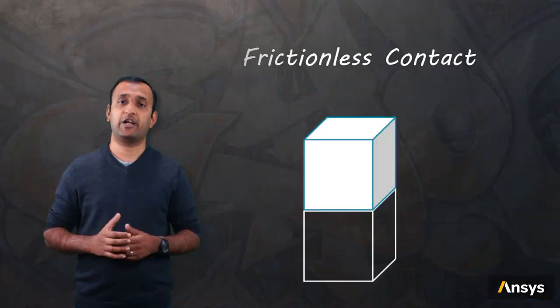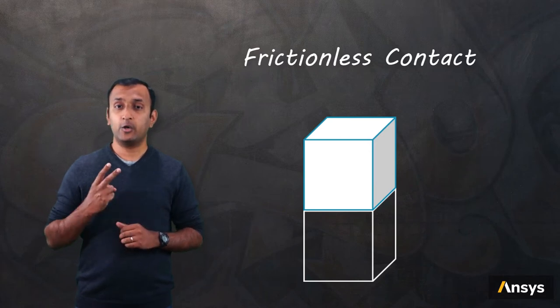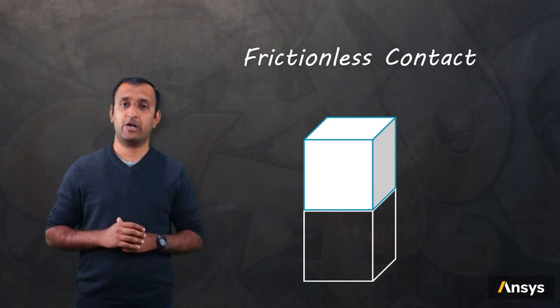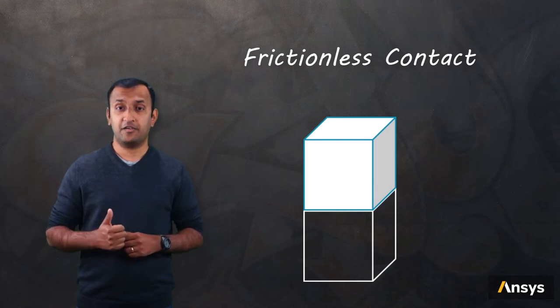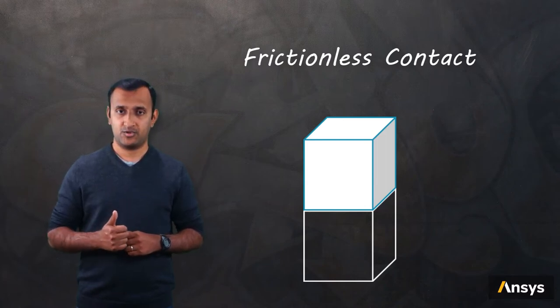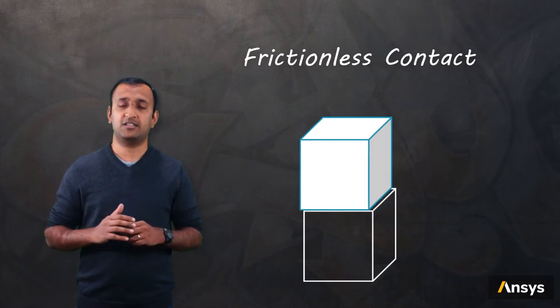Now let's look at the next type of contact, which is frictionless contact. This type of contact has two main differences compared to bonded contact. First, it does not offer any tangential force, so the surfaces are free to slide over each other without any resistance.